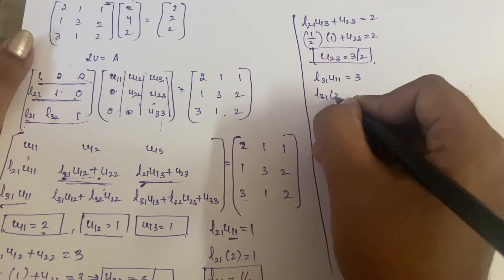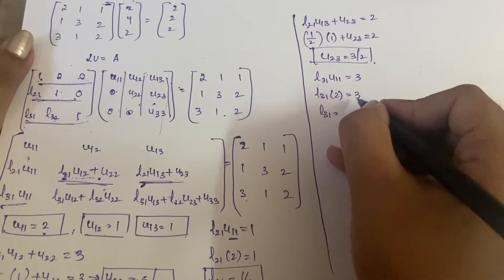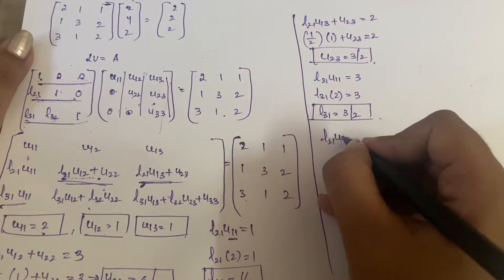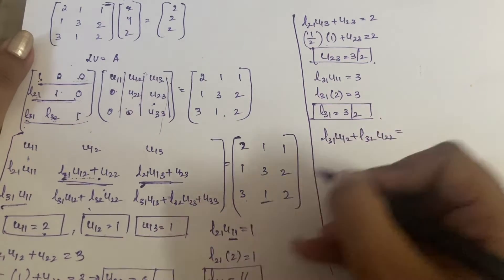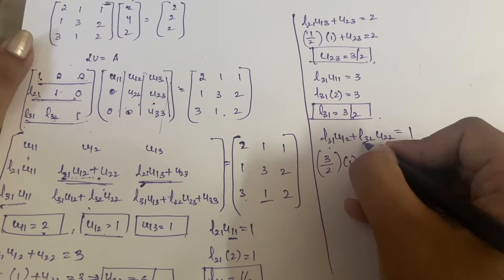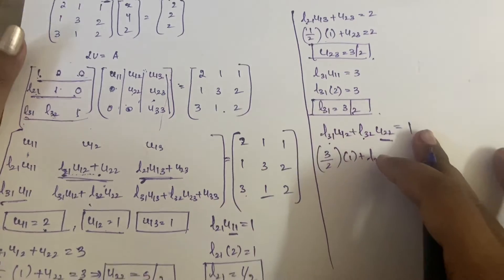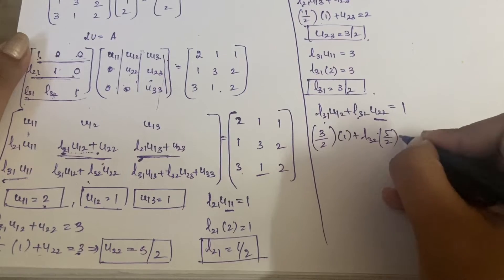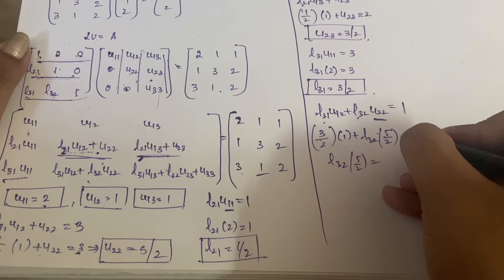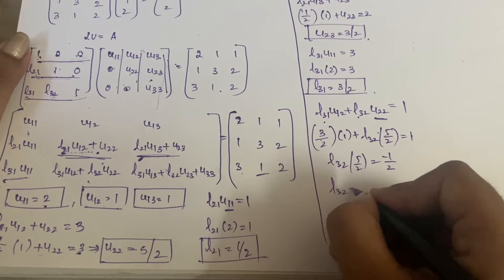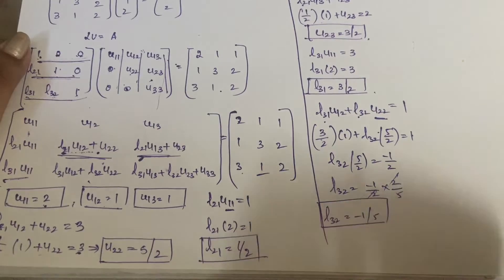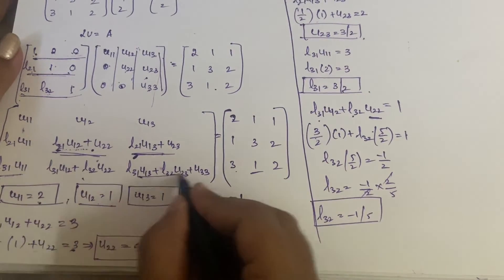L31 × 2 = 3, so L31 = 3/2. Next, L31×U12 + L32×U22 = 1. L31 is 3/2, U12 is 1, L32 is unknown, and U22 we got as 5/2. So L32 × 5/2 = 1 − 3/2 = −1/2. Therefore L32 = −1/2 × 2/5 = −1/5.